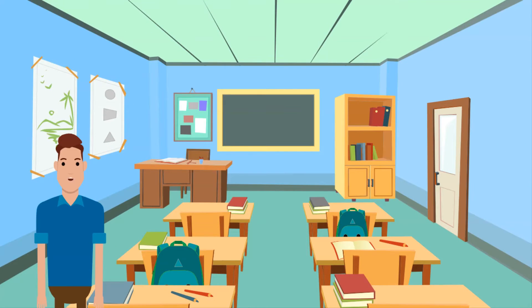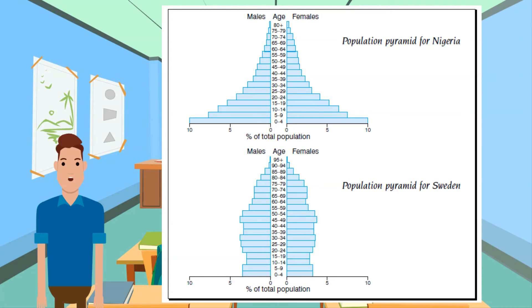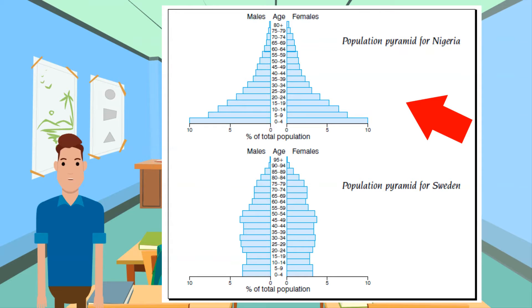Part of population distribution is population structure, which can be shown on an age-sex pyramid. Births, deaths and migration patterns can affect the shape of the pyramid. The population pyramid for a less economically developed country has a broad base and steeply sloping sides — the steep sides reflect the high infant mortality rate and the low life expectancy. Look at the top pyramid here for Nigeria.